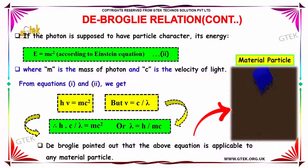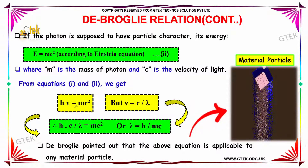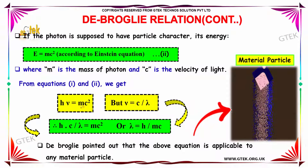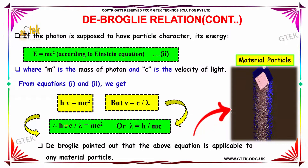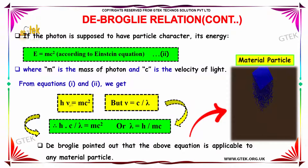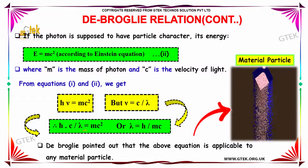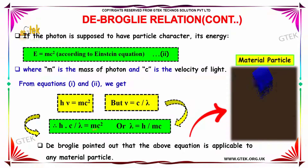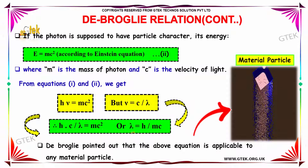From equation 1 and 2, we get hν = mc². Since ν = c/λ, replacing ν with c/λ gives h·(c/λ) = mc², which simplifies to λ = h/mc.